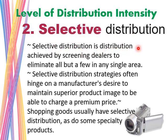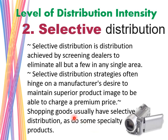Selective distribution is achieved by screening dealers to eliminate all but a few in any single area. The strategy often hinges on a manufacturer's desire to maintain a superior product image and charge premium prices. Shopping goods typically use selective distribution — for example, electrical appliances, shoes, and handbags. Some specialty goods also use selective distribution.